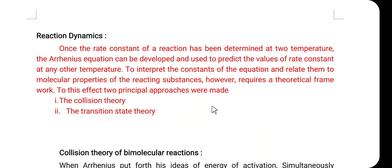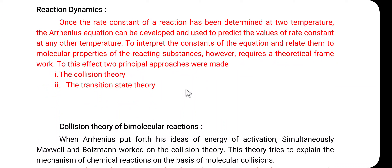By using the Arrhenius equation, if we know the rate constant of a chemical reaction at one temperature, we can determine the rate constant for the same reaction at another temperature. To interpret the constants of the equation and relate them to the molecular properties of the reacting substances requires a theoretical framework. Two principal approaches were made: the collision theory and the transition state theory. Today we are going to discuss the collision theory of bimolecular reaction.